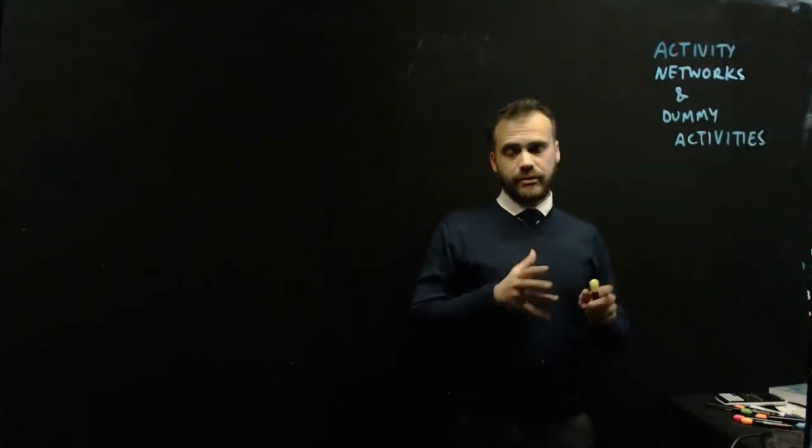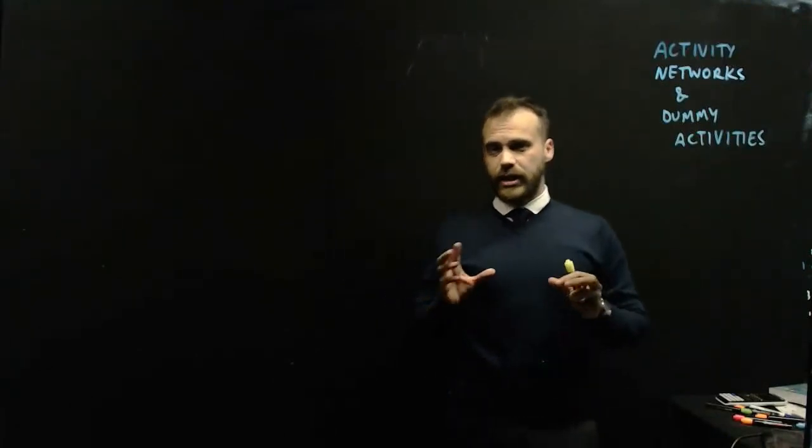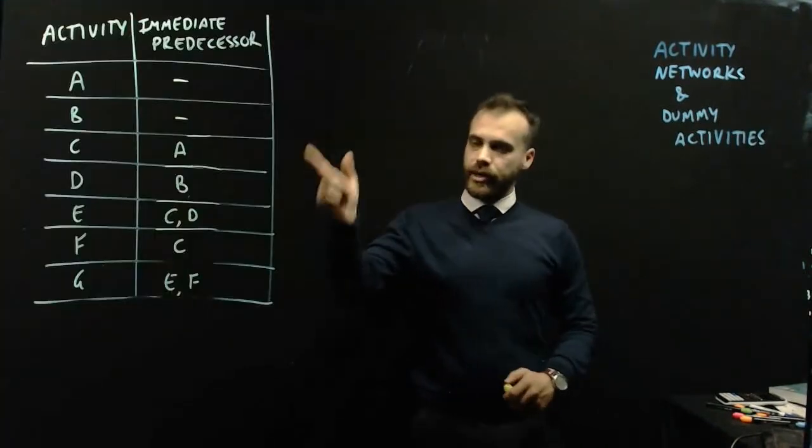We're looking at activity networks and dummy activities. To do that, we're going to have to start off with a precedence table. And there we have it.